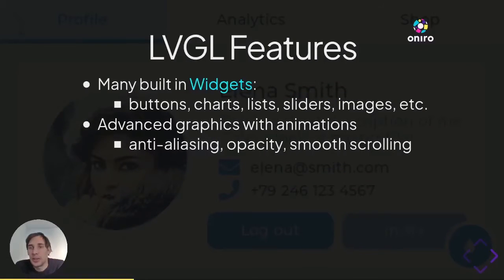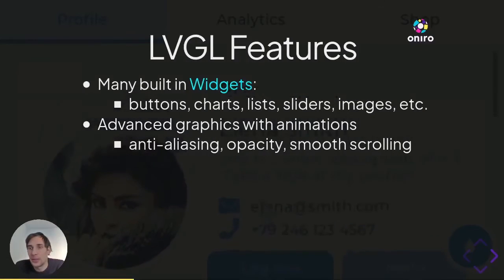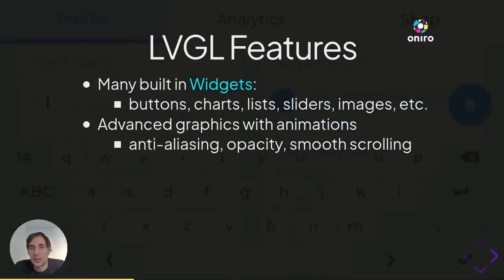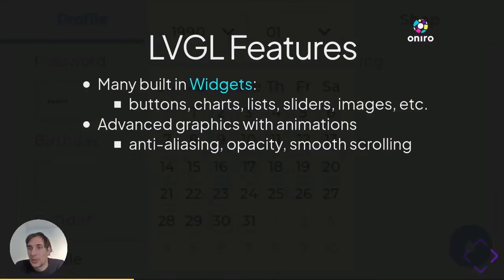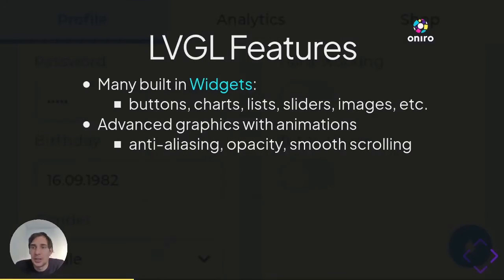Users are accustomed to the UI quality of their smartphones and they expect the same quality on other devices too. To give them this experience, with LVGL you can draw anti-aliased shapes, use opacity, use various blending modes, smoothly scroll content, add animations, and so on. Basically, what you usually see in an Android application can be realized with LVGL too.